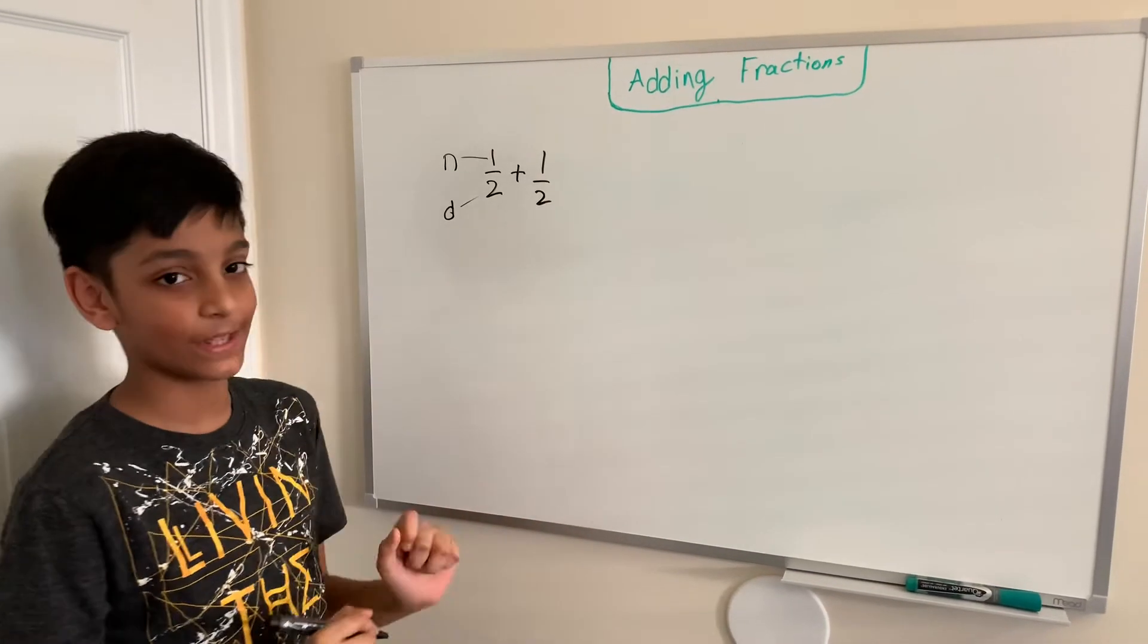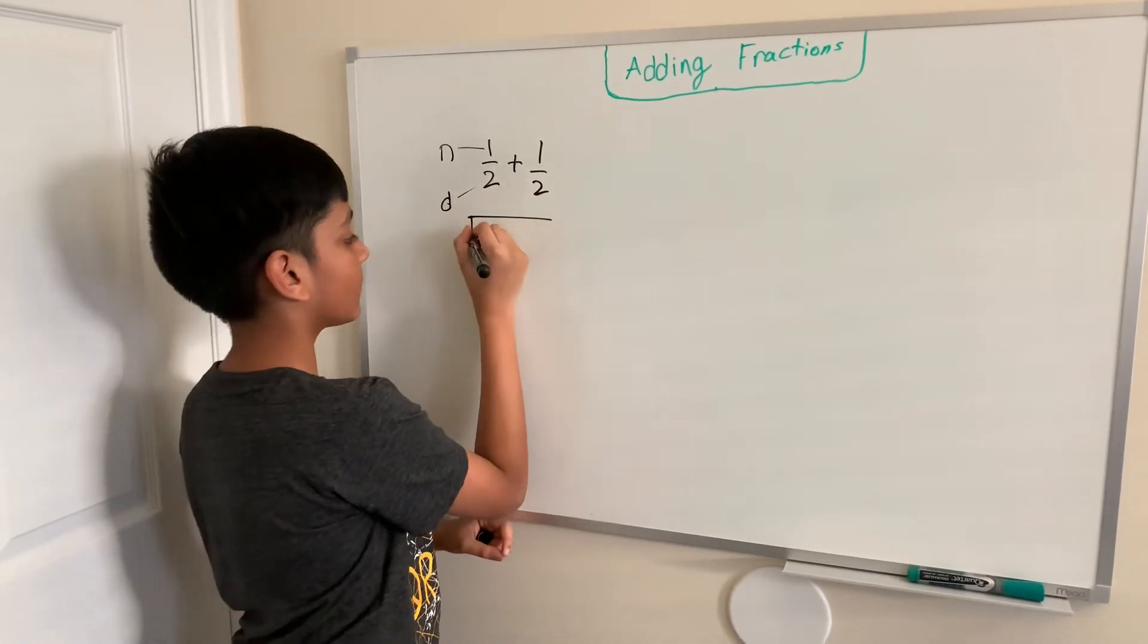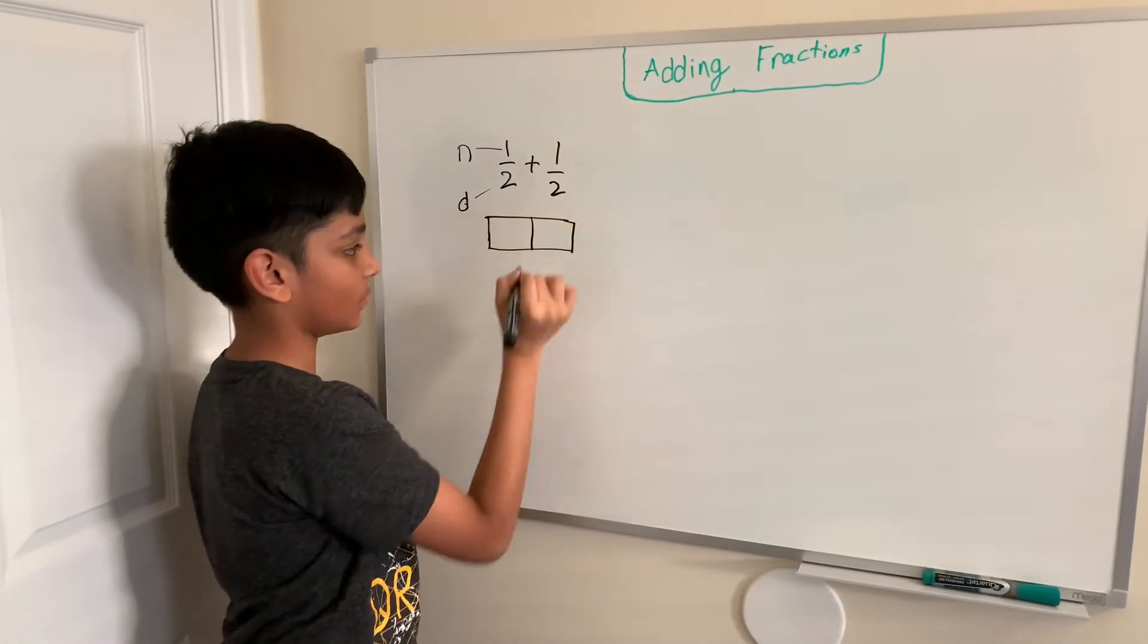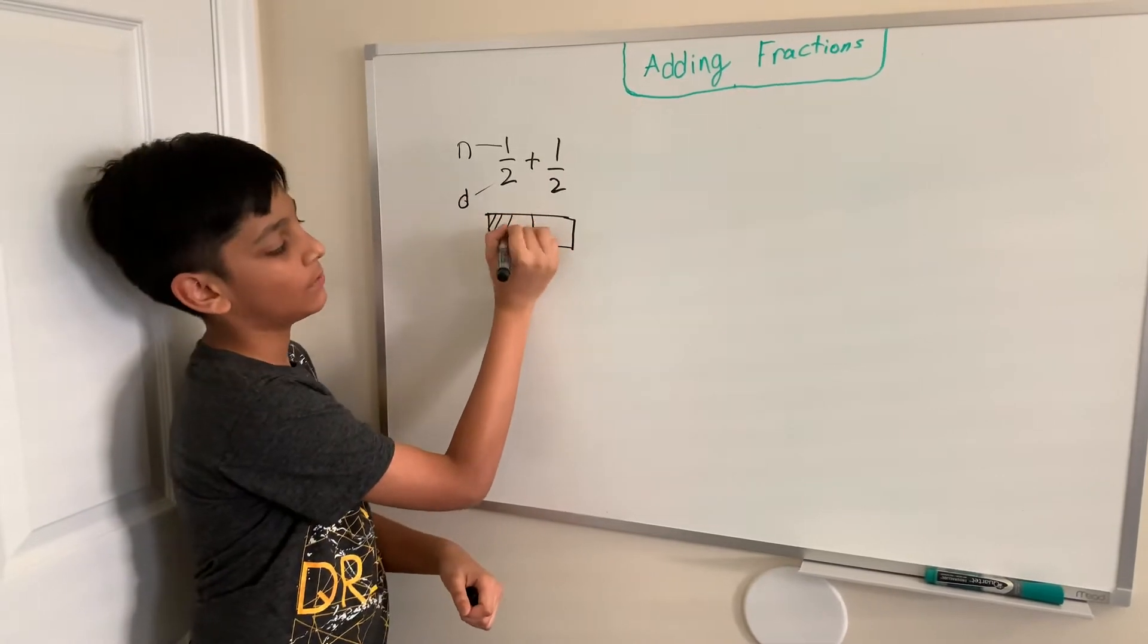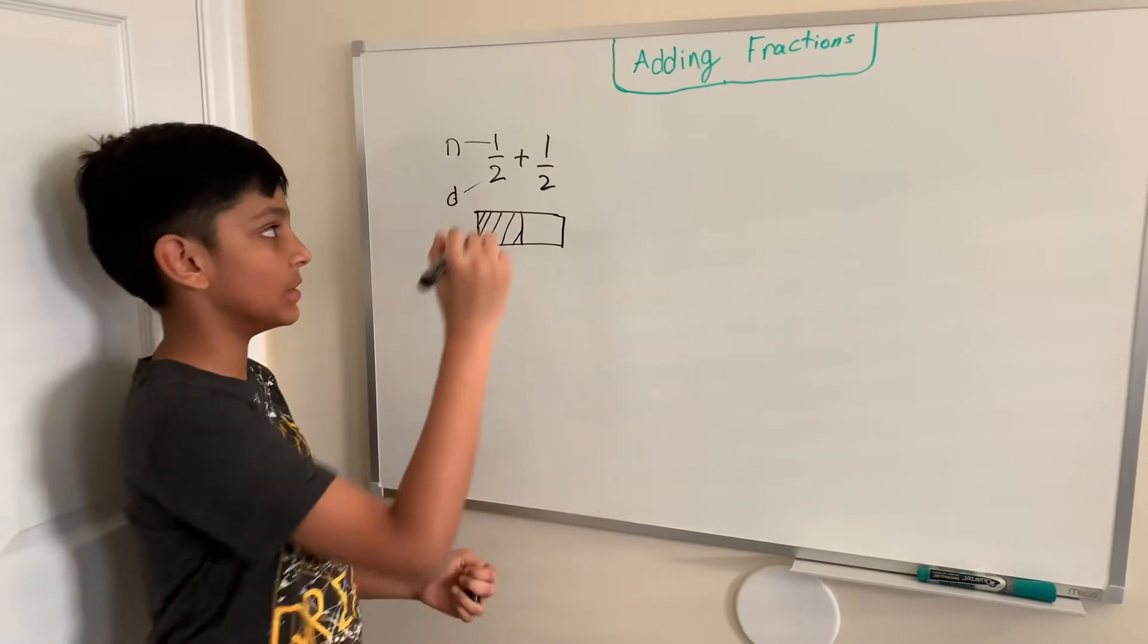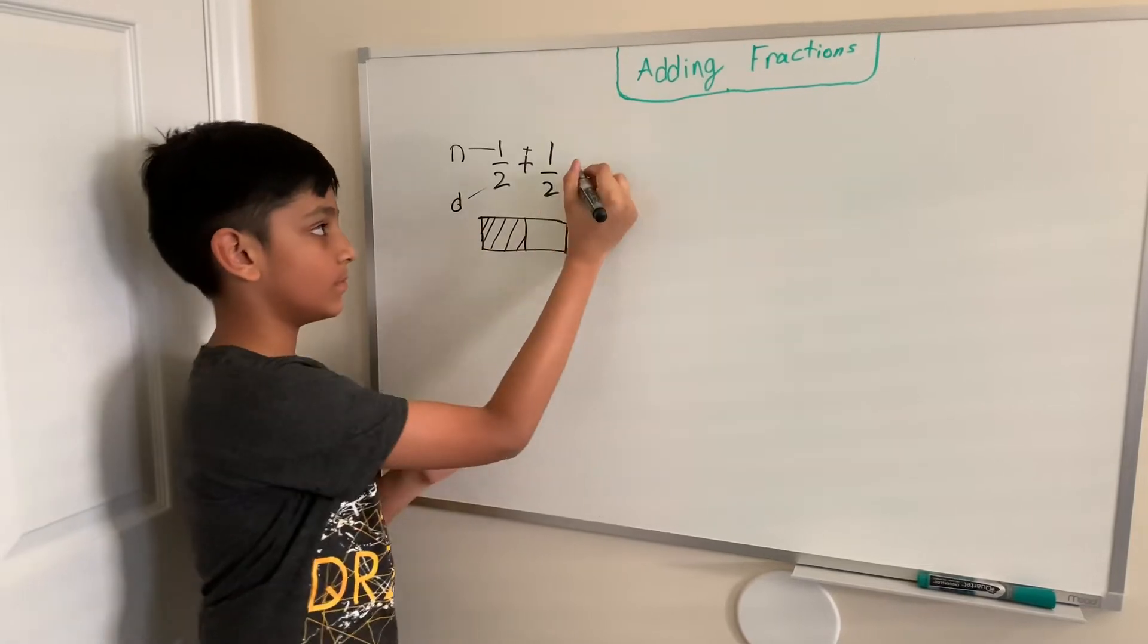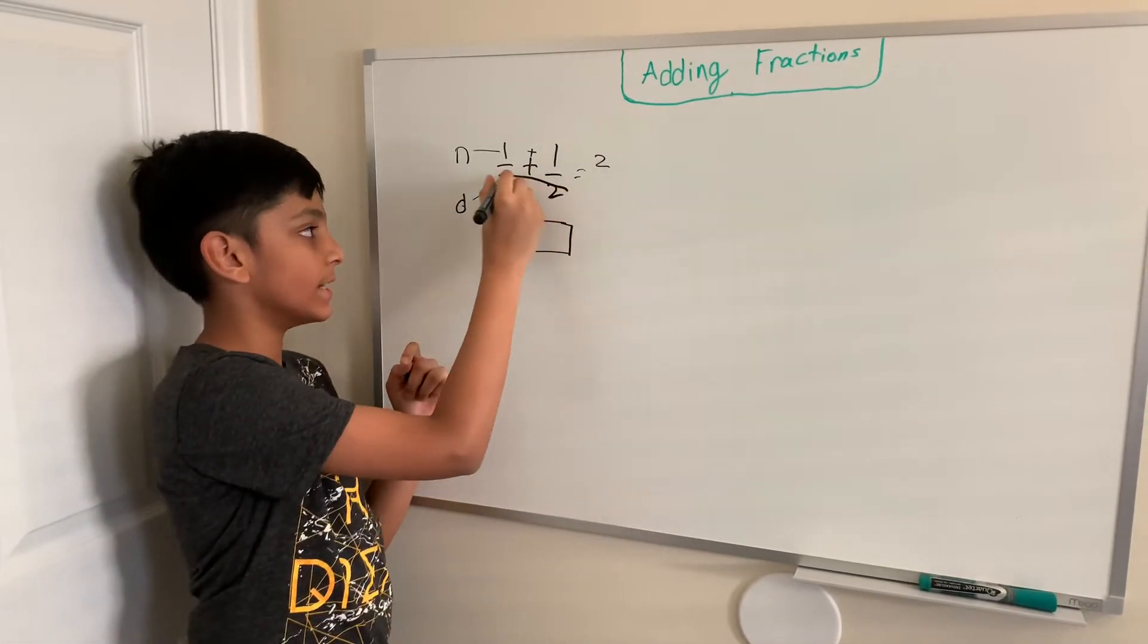So, let's continue with adding. If I was to draw this out, I would have to divide it into two pieces since it's one half. So, I already have one half and I want to get another half. What we want to do is add the numerators together. We would get two in the numerator.